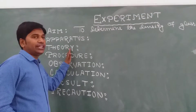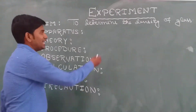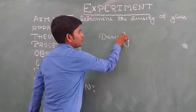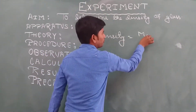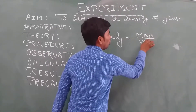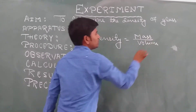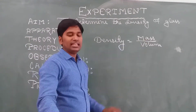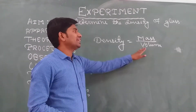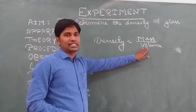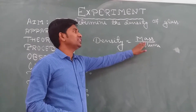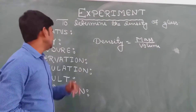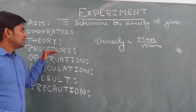The next point is theory. As we know, density equals mass divided by volume. First we will calculate the mass of the glass slab, then we will determine the volume of the glass slab. After finding these two values, we will divide mass by volume to get the density.